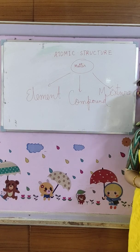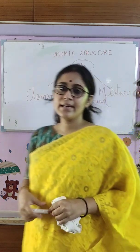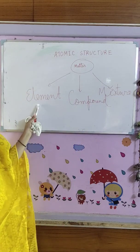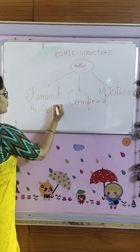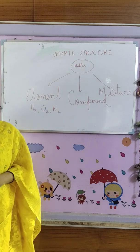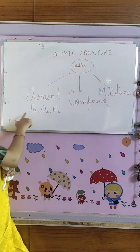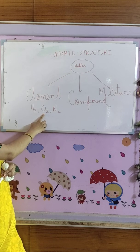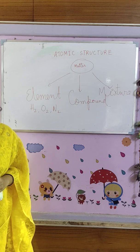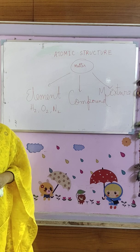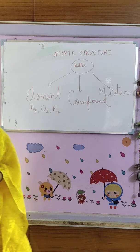What is an element? Element is the simplest form of matter. Like hydrogen H₂, O₂, N₂ — these are the elements. Why? Because in an element, there is only one type of atom. In hydrogen, only H is there. In oxygen, only O is there. In nitrogen, only N is there. So element has only one kind of atom, and if we want to break down an element, we cannot get any simpler form. So element is the simplest form of matter.